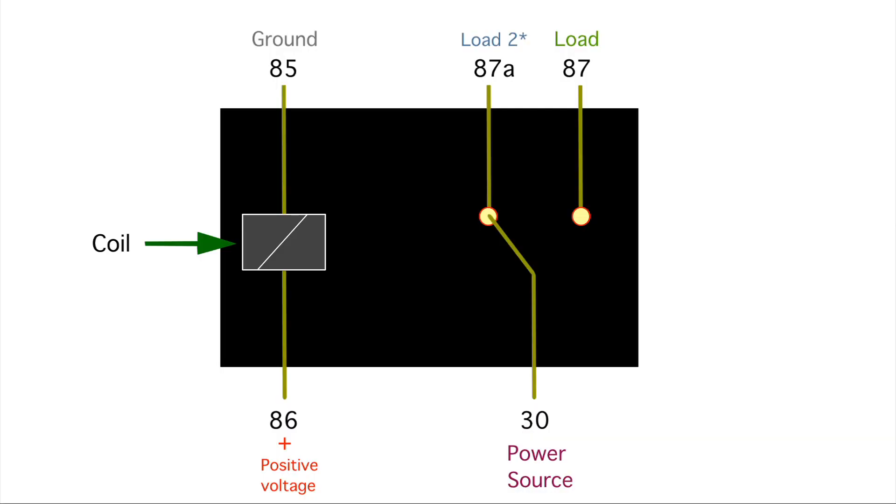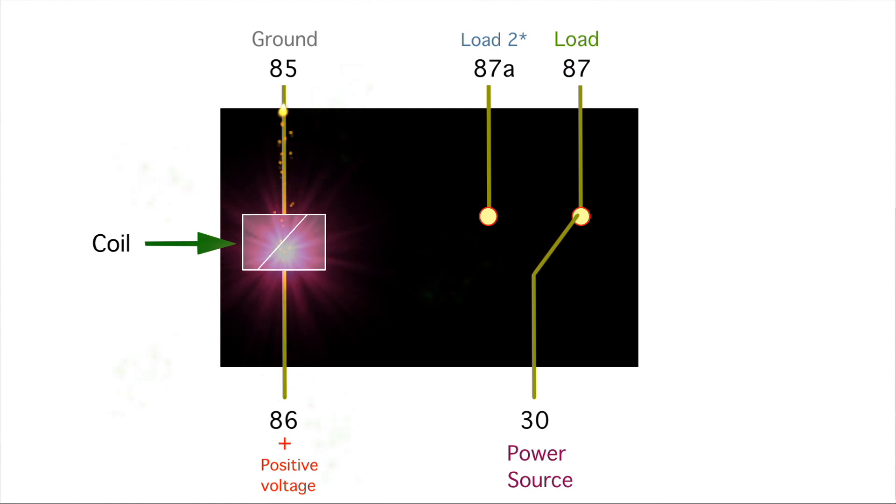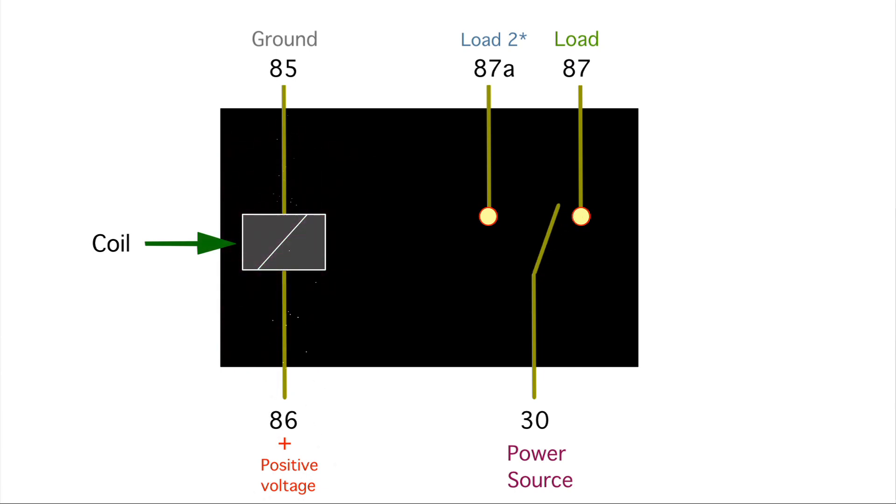This 86 would be connected to some kind of switch that activates the component we want to power. When we hit 86, we already have ground, and now we get positive voltage. We create this electromagnetic force, and once we have that magnetism, this contact swings over to 87 and connects 30 to 87 when it's energized.